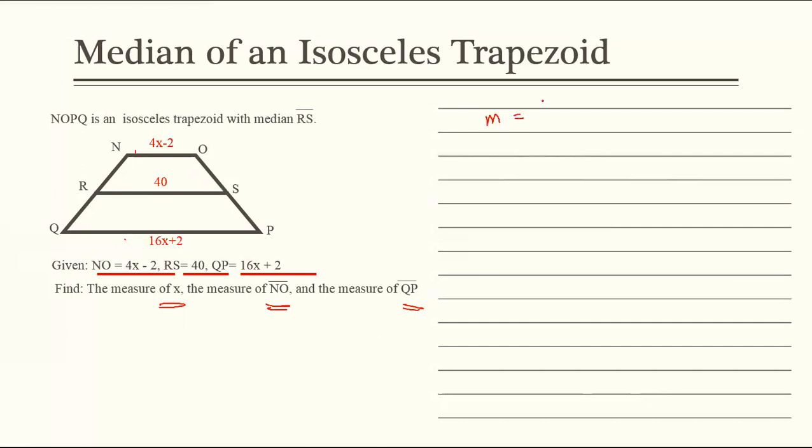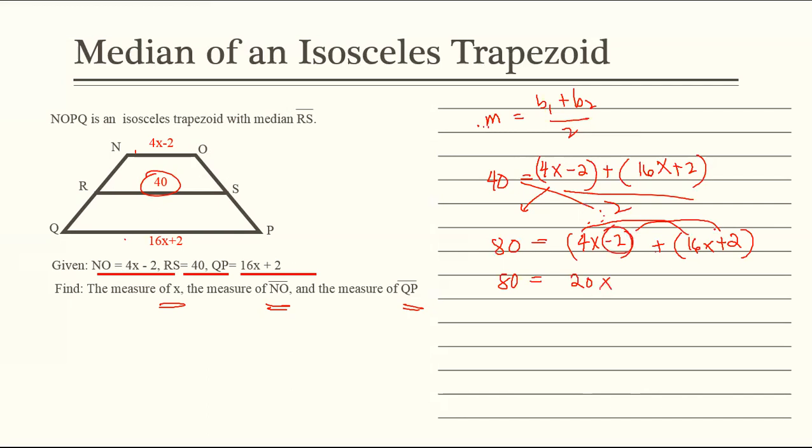we're going to use the formula M is equal to B1 plus B2 over 2. Substitute lang natin yung M natin 40, is equal to 4x minus 2 plus 16x plus 2 all over 2. So para mawala ang denominator, cross-multiply lang yan. So magiging 80 is equal to the sum of 4x minus 2 and 16x plus 2. So magiging 80 is equal to combine like terms lang yan, magiging 20x dahil negative 2 to at positive 2 cancel na yan. And then solve for x, divide both sides by 20, x is equal to 4.